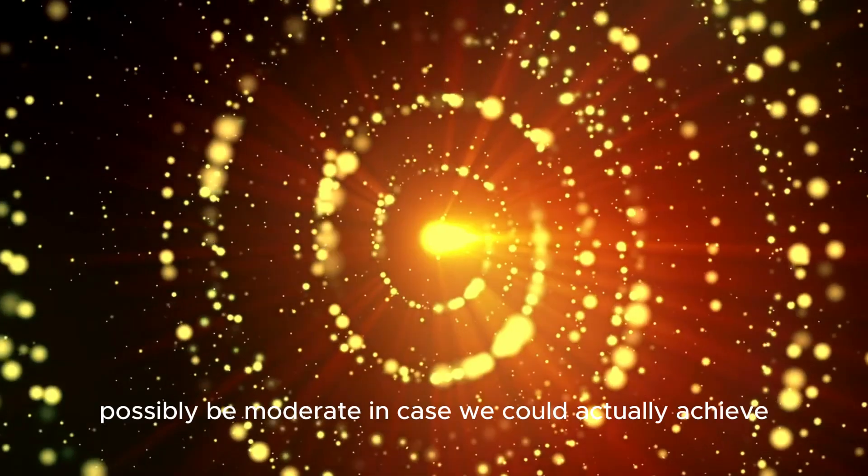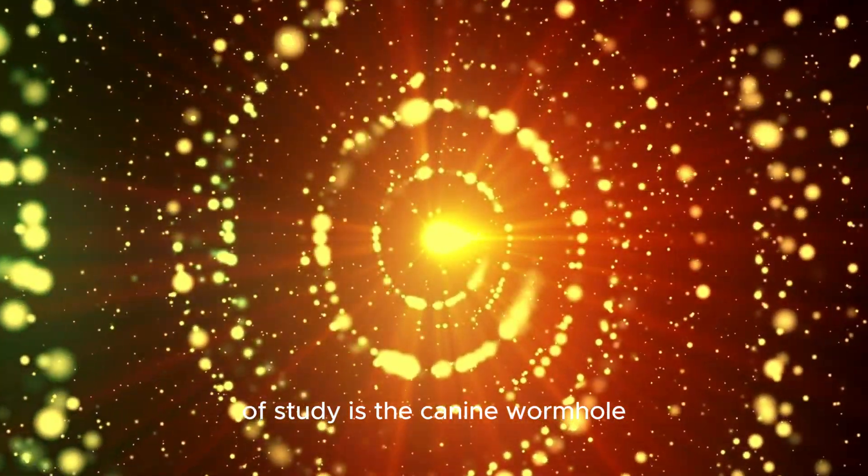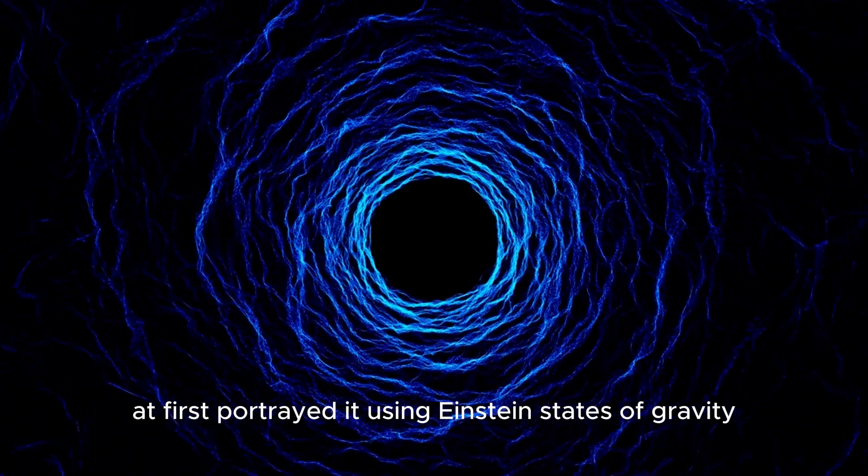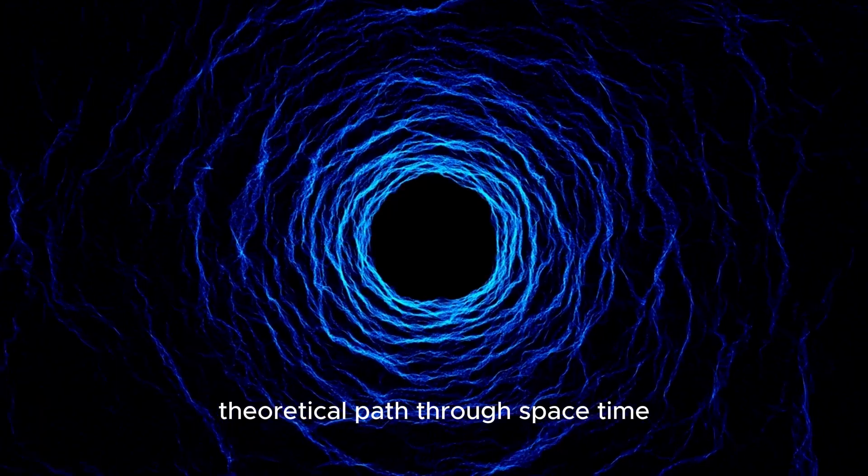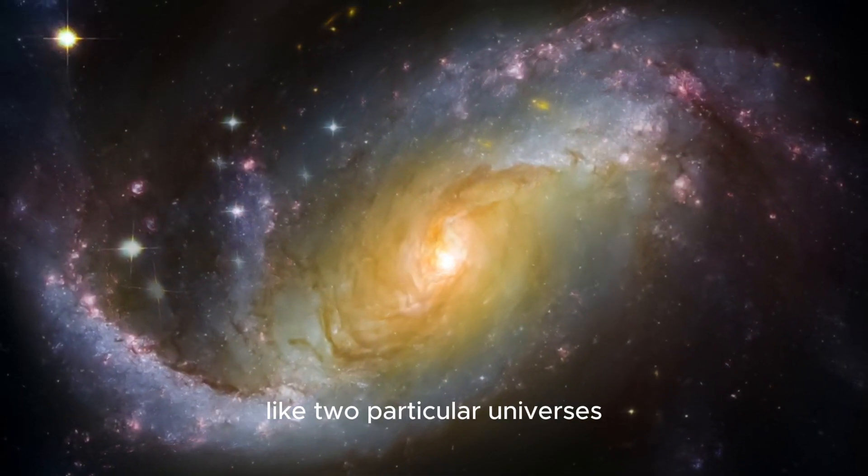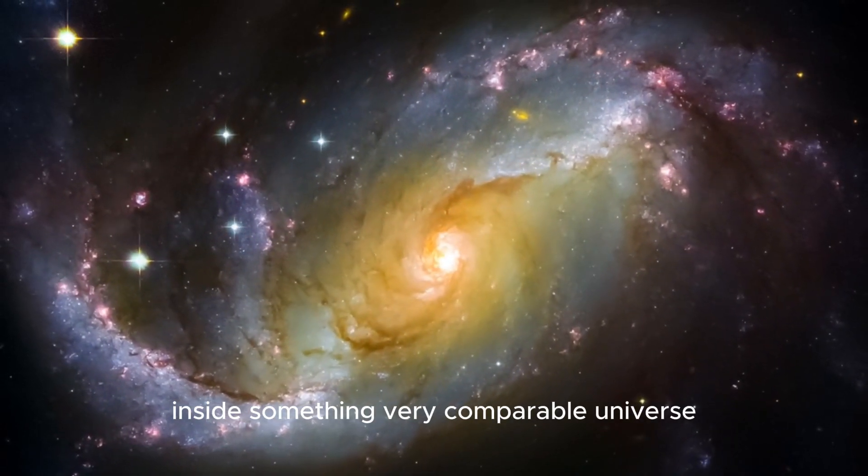In case we could actually achieve one of the most captivating thoughts around here of study is the canine wormhole, which is named after the mathematician Royer who at first portrayed it using Einstein's states of gravity. This kind of wormhole is fundamentally a theoretical path through space-time that might communicate to at some point far away core interests, like two particular universes or even two novel times inside something very similar universe.